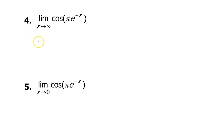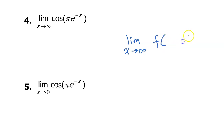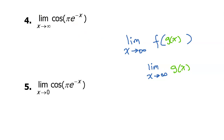Problem number four is going to require more intuition and less algebra. When dealing with a composite function, if we have the limit as x approaches infinity of f(g(x)), we are allowed to take the limit of the inner function first, then apply the outer function to that limit. Always keep that strategy in mind.